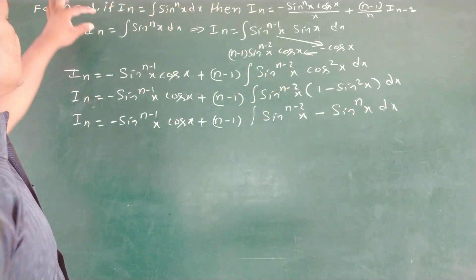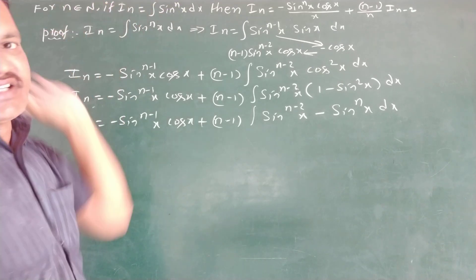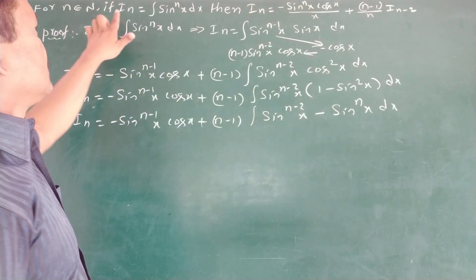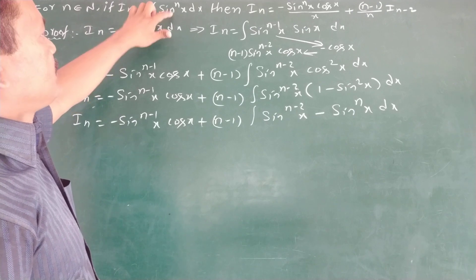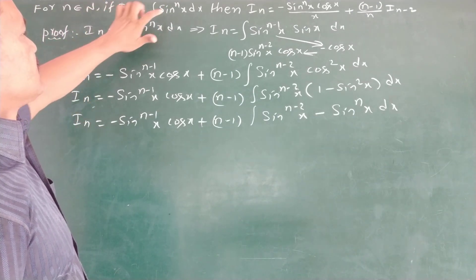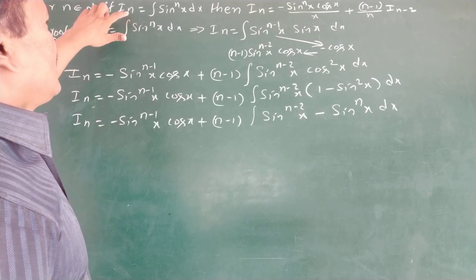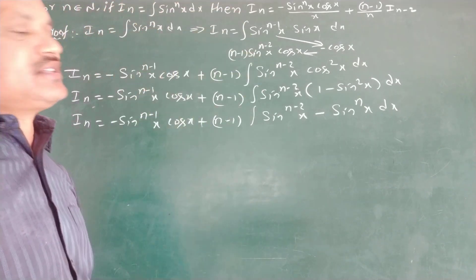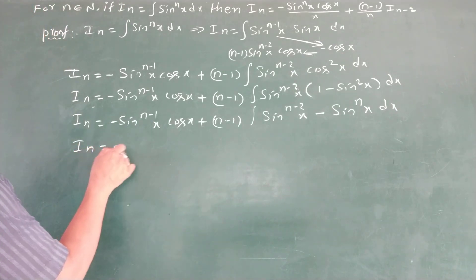We know that Iₙ equals the integral of sinⁿx dx, Iₙ₋₁ equals the integral of sinⁿ⁻¹x dx, Iₙ₋₂ equals the integral of sinⁿ⁻²x dx, and Iₙ₋₃ equals the integral of sinⁿ⁻³x dx.